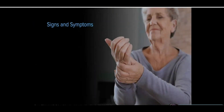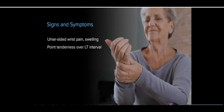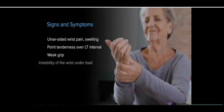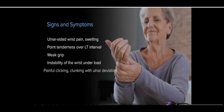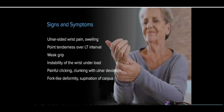Diagnosing a lunotriquetral ligament injury is more difficult than a scapholunate ligament. The patient will characteristically present with ulnar-sided wrist pain, point tenderness over the lunotriquetral interval, weak grip, instability of the wrist under load, painful clicking or clunking with ulnar deviation, and a fork-like deformity may also be observed.